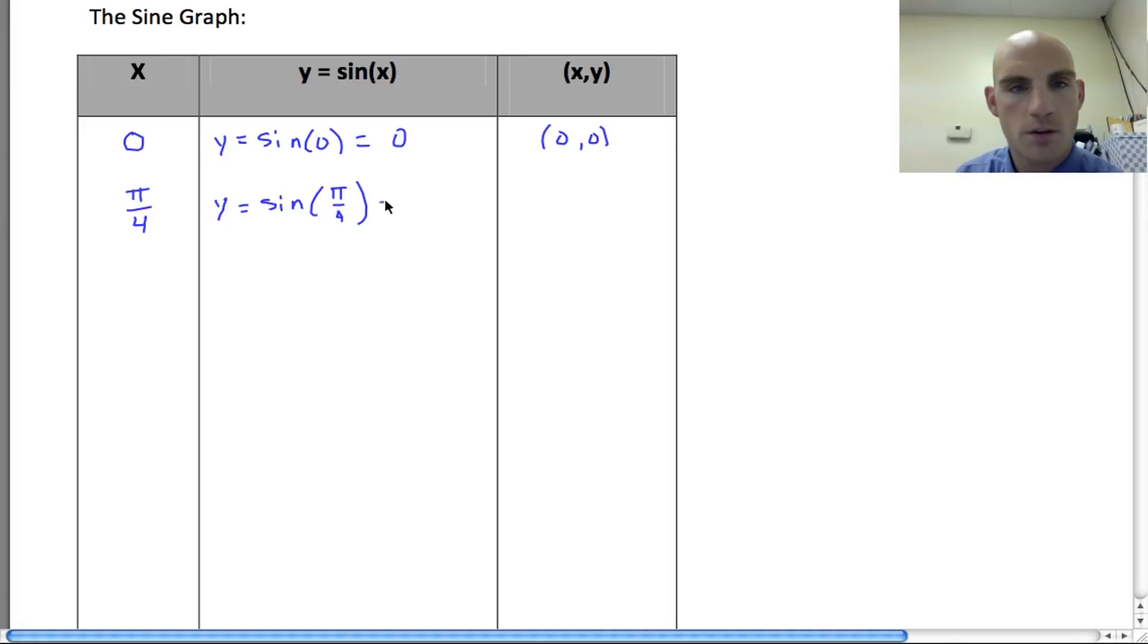So y = sin(π/4). Let's clean this up a little bit. The sine of π/4, if we look at our unit circle, is going to be 1/√2. So our (x,y) pair is going to be π/4, 1/√2, which is about 0.7. Going down the line, I'm picking some other values.